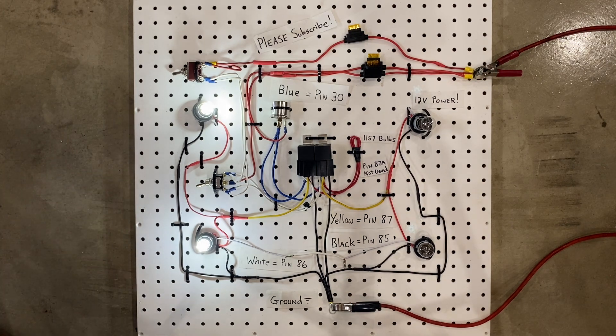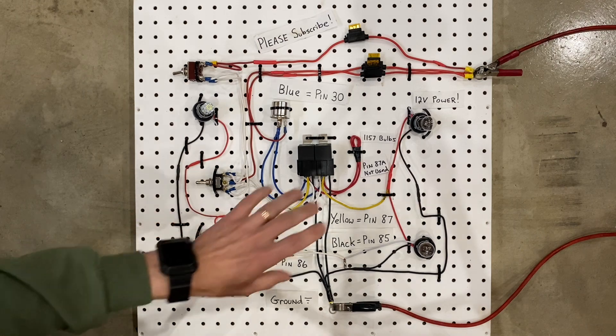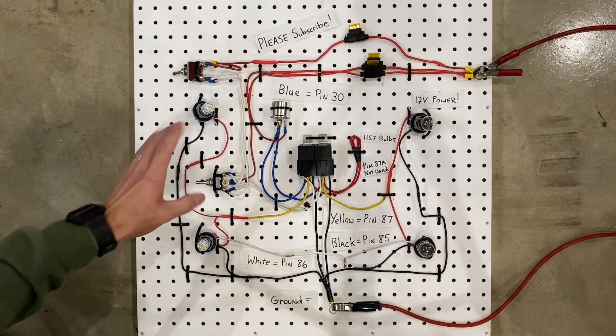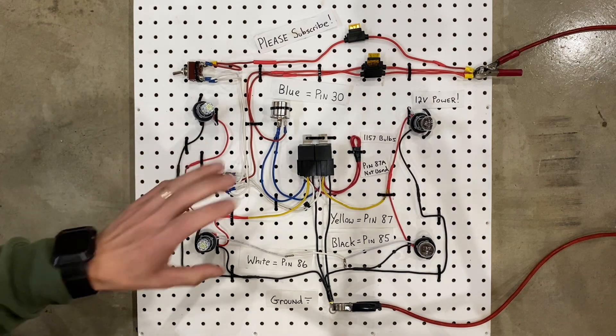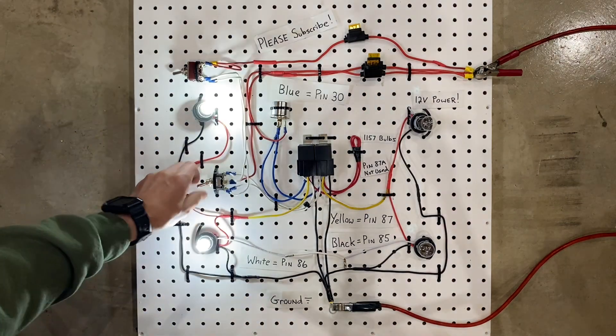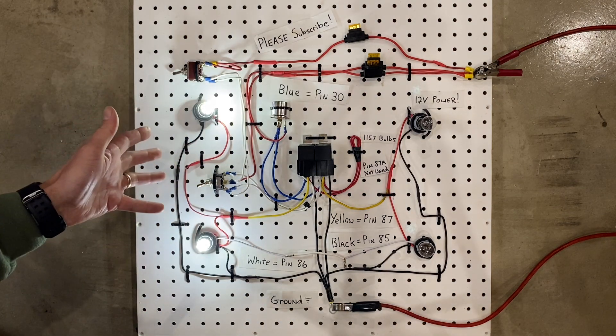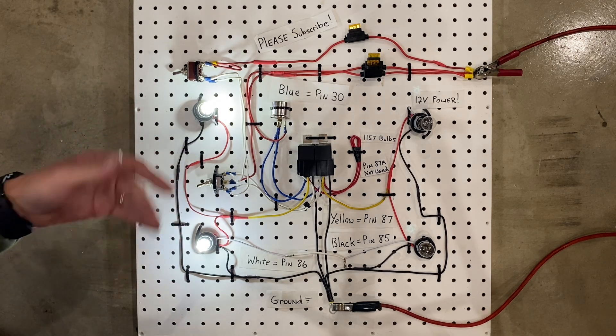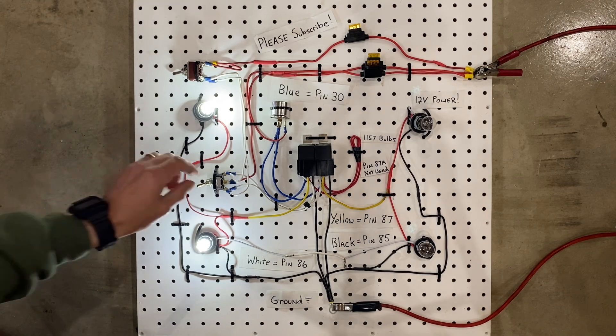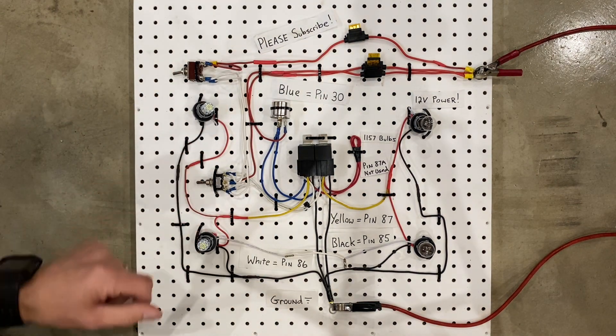Now this right here is a turn signal circuit. I have the right turn signals and I have the left turn signals. If you just buy some LED light bulbs and plug them into your turn signals, what often happens is you have no more turn signals. They turn on but they don't do anything, and there's a very good reason for that.